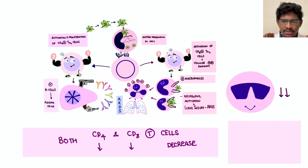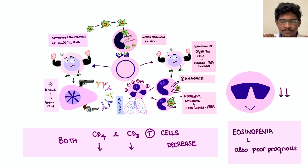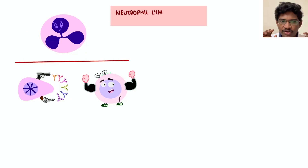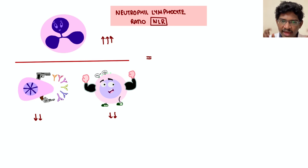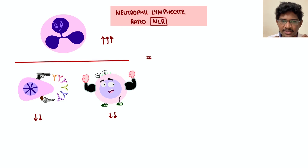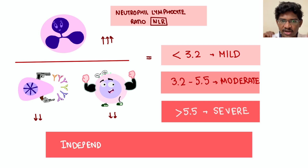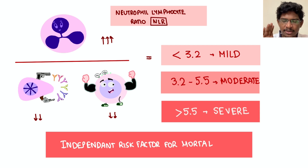Both arms of immunity are affected, so both CD4 and CD8 T cells reduce. Eosinophils — if they decrease, it also goes towards poor prognosis. The only cell increased in COVID is neutrophils. As severity increases, neutrophils are the key player in ARDS. The higher the neutrophils with subsequent decrease in lymphocytes is a severity predictor — the neutrophil lymphocyte ratio, NLR. Normal/mild COVID: NLR less than 3.2. Moderate elevation: 3.2 to 5.5. Severe elevation: more than 5.5. It is also an independent risk factor for mortality and should be combined with other markers.